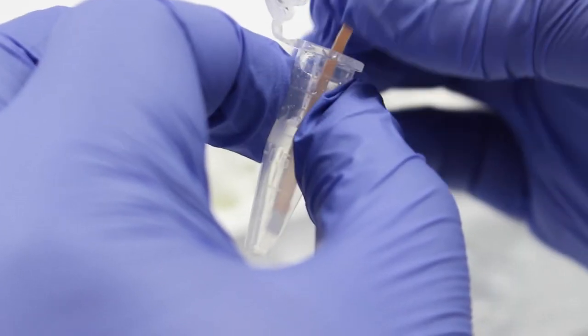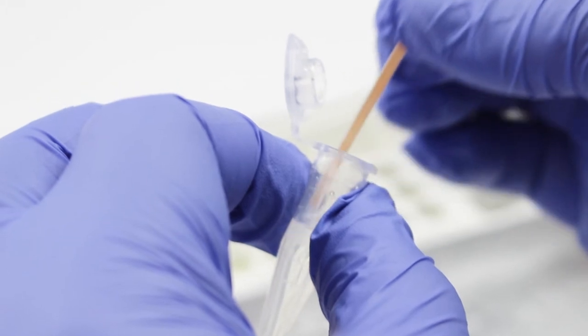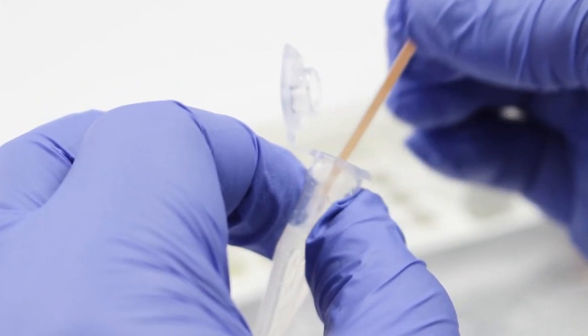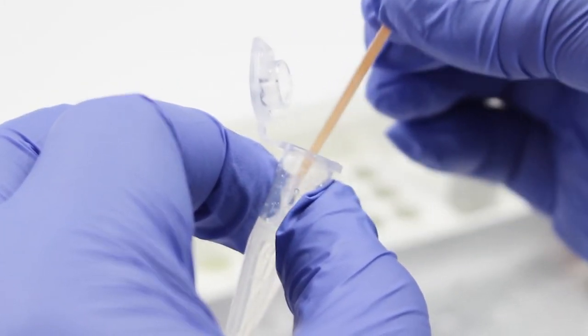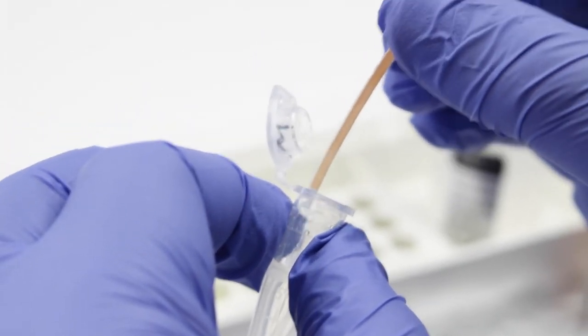Then gently dip the dipstick into the tube of wash buffer five times. When you remove the dipstick, check that there are no large droplets of buffer on the dipstick. If there are, gently touch the dipstick to the edge of the tube to remove the droplets.